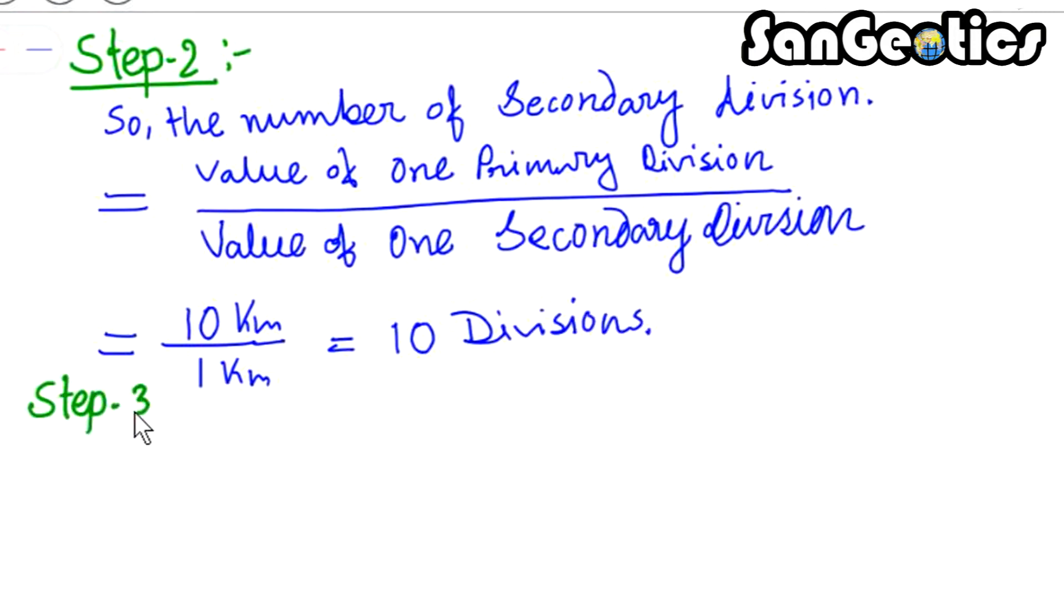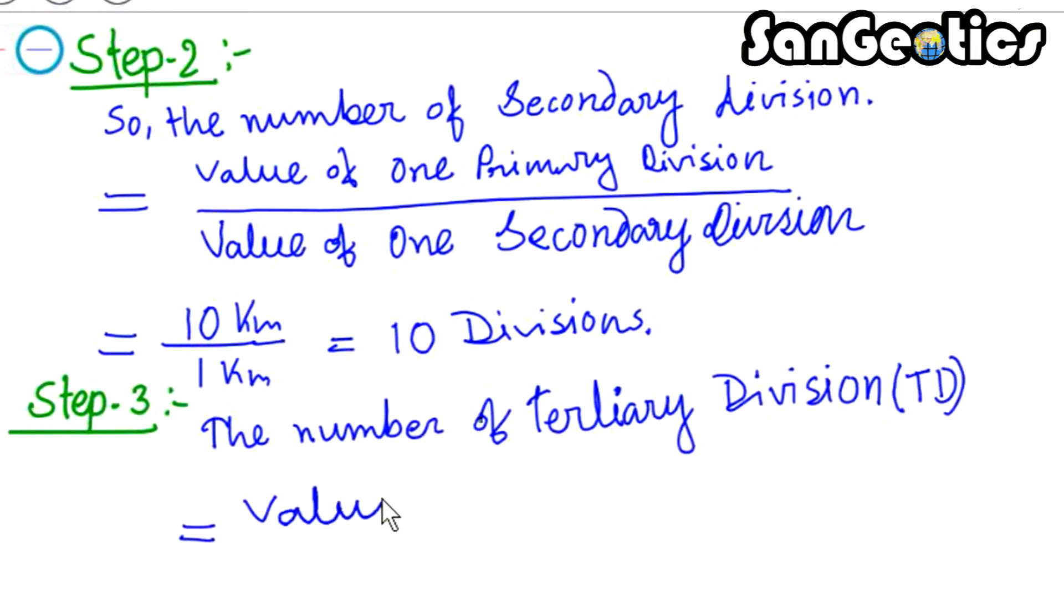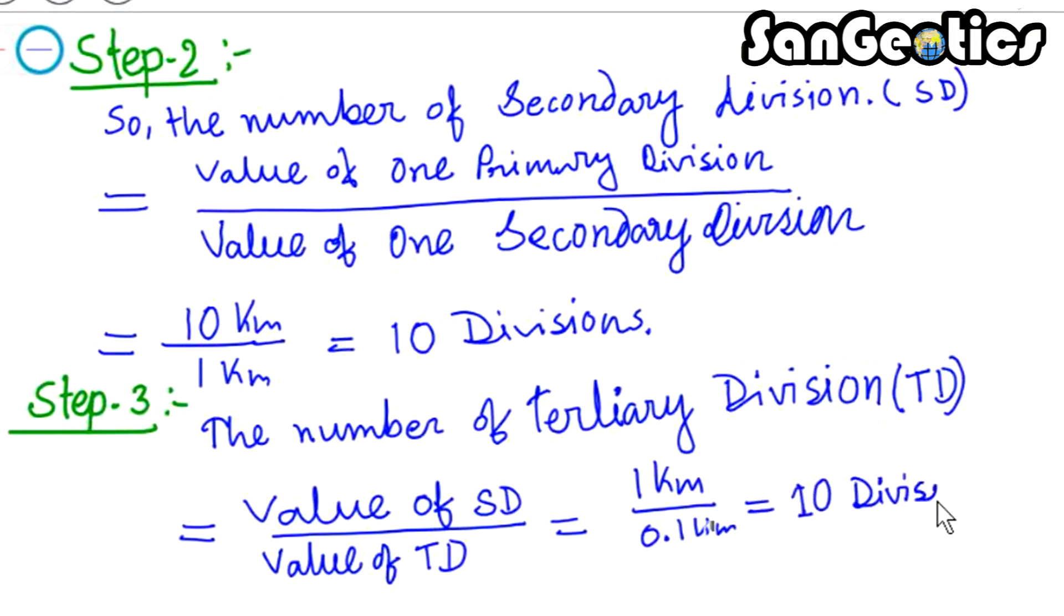Step 3. The number of tertiary division is equal to value of one secondary division divided by value of one tertiary division, equals 1 km divided by 0.1 km, equals 10 divisions.